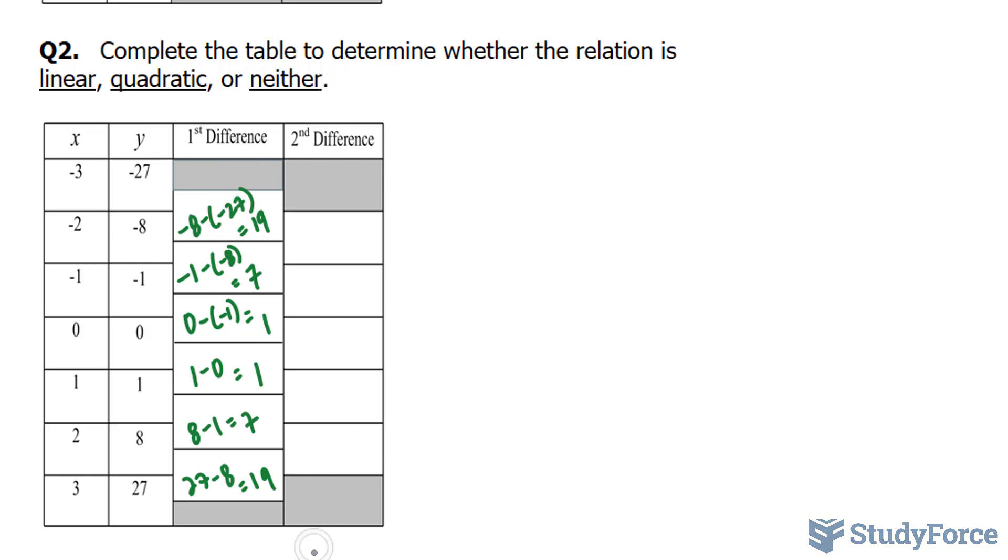And for your second differences, we will subtract 7 from 19, 1 from 7, 1 from 1, 7 from 1, and 19 from 7. And also, I forgot to mention that since the first differences are not the same, this cannot be linear.